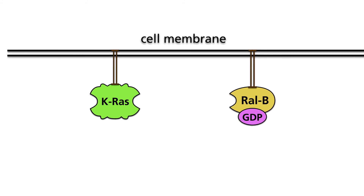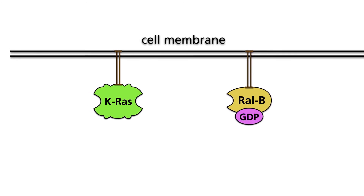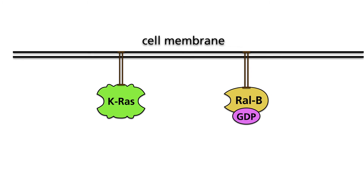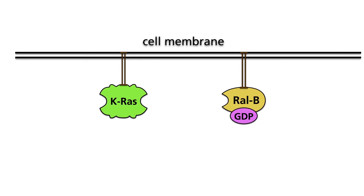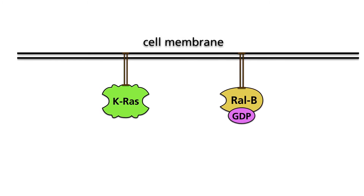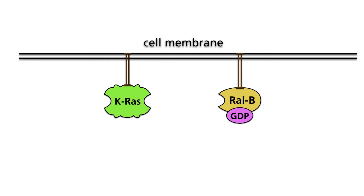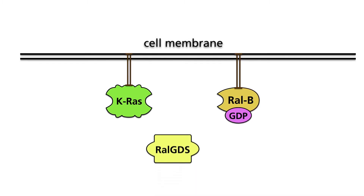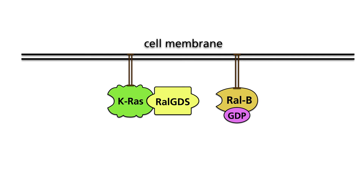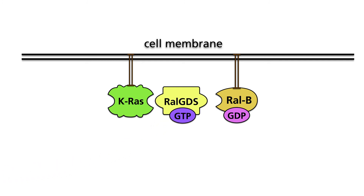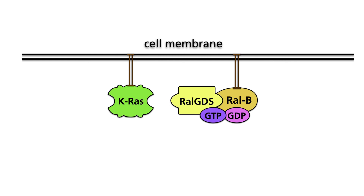Based on targeted deletion and silencing experiments, the following model has been suggested. The mutant and constitutively active KRAS associates with RAL-GDS, a guanine nucleotide exchange factor of the RAL-GEF family. Upon association, RAL-GDS assists in the exchange of GDP bound to RAL-B for GTP, leading to the activation of the RAL-B protein.